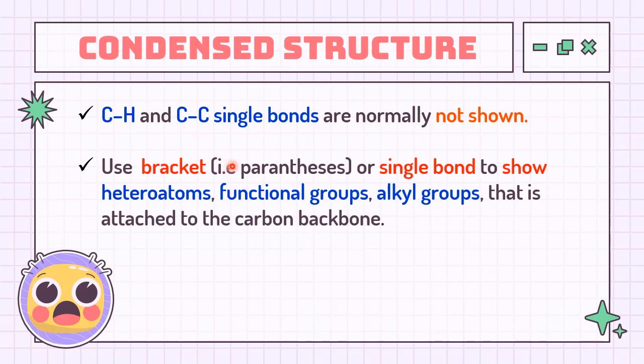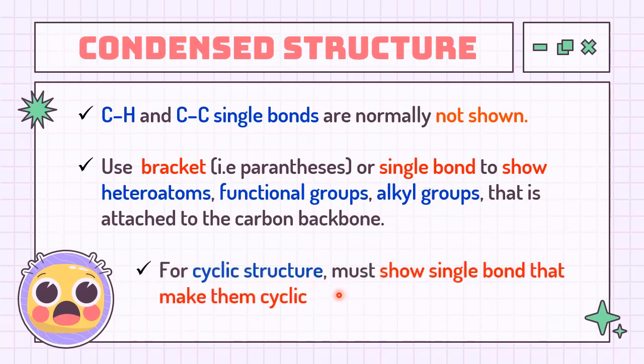To show heteroatoms other than carbon or functional groups or alkyl groups that attach to the carbon backbone we have in organic structure, it will require the use of the bracket or sometimes a single bond. If a cyclic structure is condensed, then the carbon-carbon single bond that makes them cyclic needs to be shown.